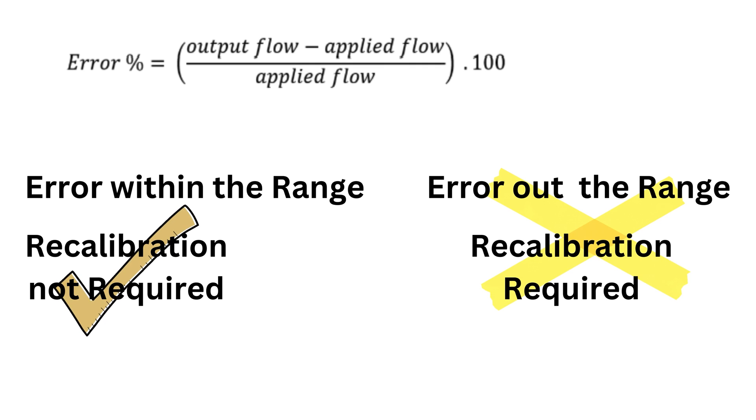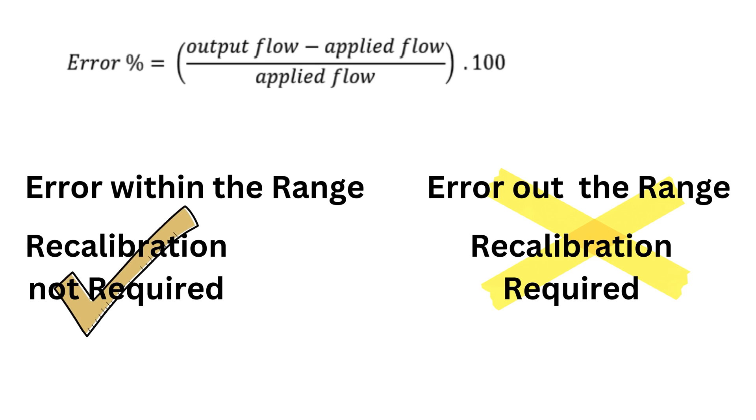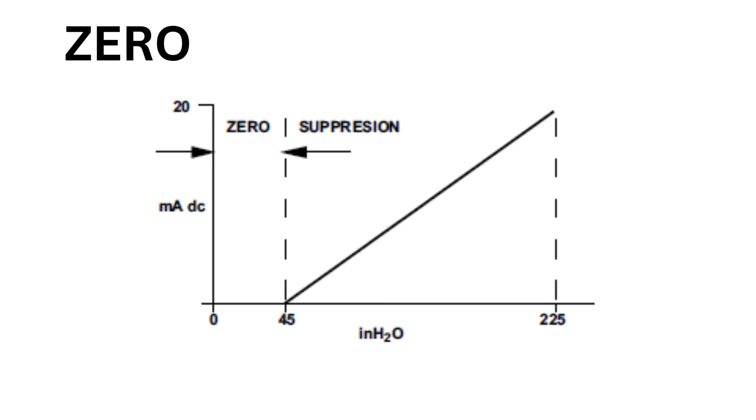A recalibration of a DP flow transmitter with internal square root extraction consists of a lower trim at the 10% flow point and a span trim at the 100% flow point. We cannot do a zero trim for a transmitter with square root extraction because the zero point is too unstable. Any fluctuation in the input signal, no matter how small, is multiplied tenfold at the output.